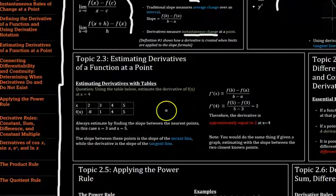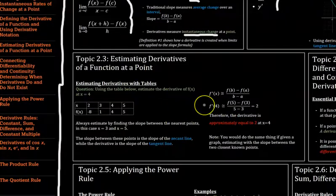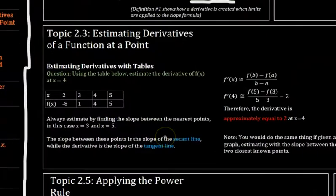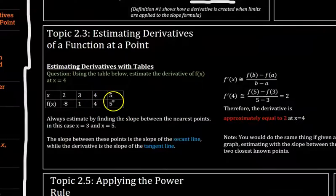Topic 2.3 is about how you can estimate derivatives without actually knowing the function. Remember that the derivative is kind of like a slope just at one point instead of two. But if we choose two points that are pretty close to each other the slope is going to approximate the derivative.